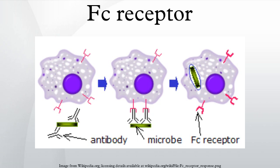Cellular activation by FC receptors: When IgG molecules specific for a certain antigen or surface component bind to the pathogen with their Fab region, their FC regions point outwards in direct reach of phagocytes. Phagocytes bind those FC regions with their FC receptors. Many low-affinity interactions are formed between receptor and antibody that work together to tightly bind the antibody-coated microbe. The low individual affinity prevents FC receptors from binding antibodies in the absence of antigen, reducing the chance of immune cell activation in the absence of infection.